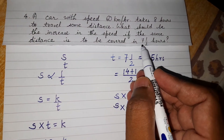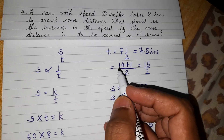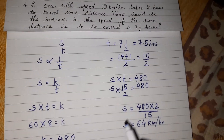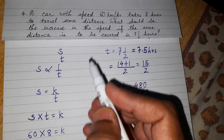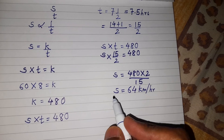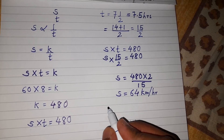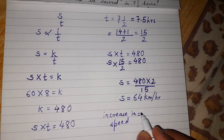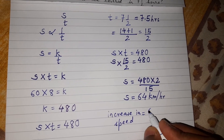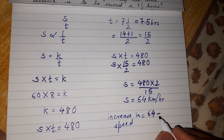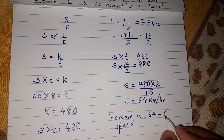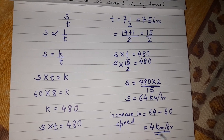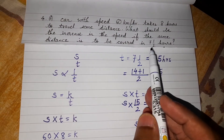So the speed should be 64 kilometers per hour to cover the same distance in 7.5 hours instead of 8 hours. The speed has to increase to cover the same distance in less time. But we are asked to find the increase in speed — the difference between the new speed and the original speed. The new speed is 64 km/h and the original was 60 km/h, so the increase in speed is 4 kilometers per hour.